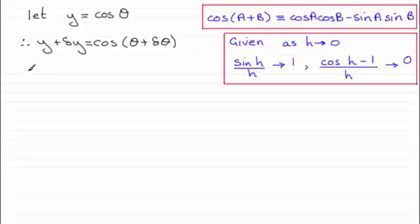Next I'm going to subtract y from both sides. So therefore I get delta y equals the cosine of theta plus delta theta minus y. And I'm going to now expand the cosine of theta plus delta theta using this identity here.